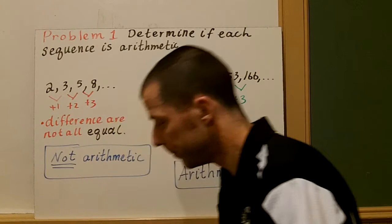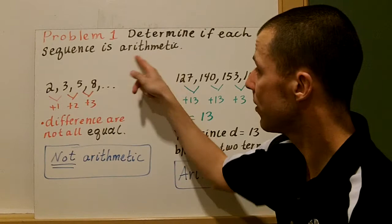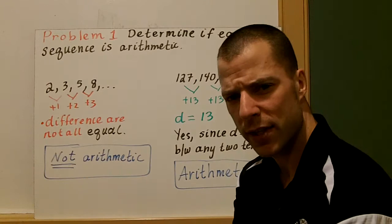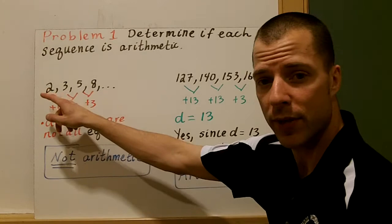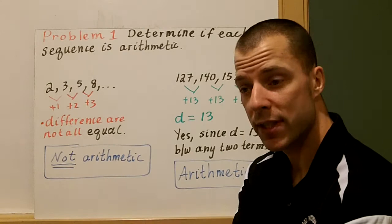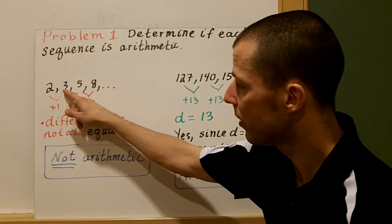Problem number one: determine if each sequence is arithmetic. We have to check whether the difference between consecutive terms is constant. In this first example, we have the sequence 2, 3, 5, and 8. Between 2 and 3 the difference is 1, between 3 and 5 the difference is 2, and between 5 and 8 the difference is 3.